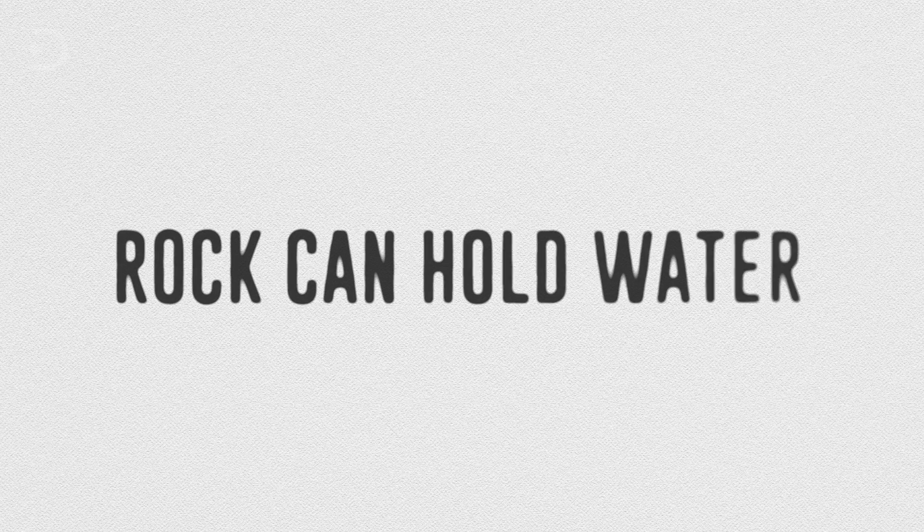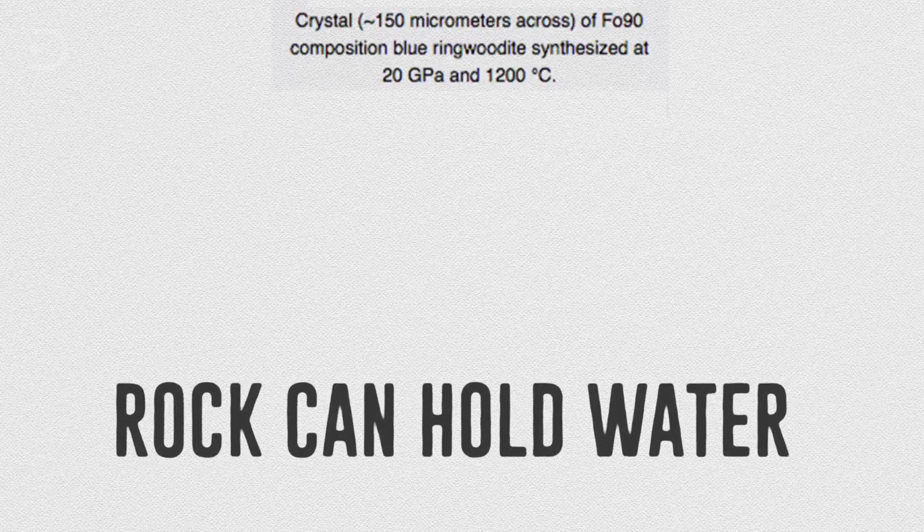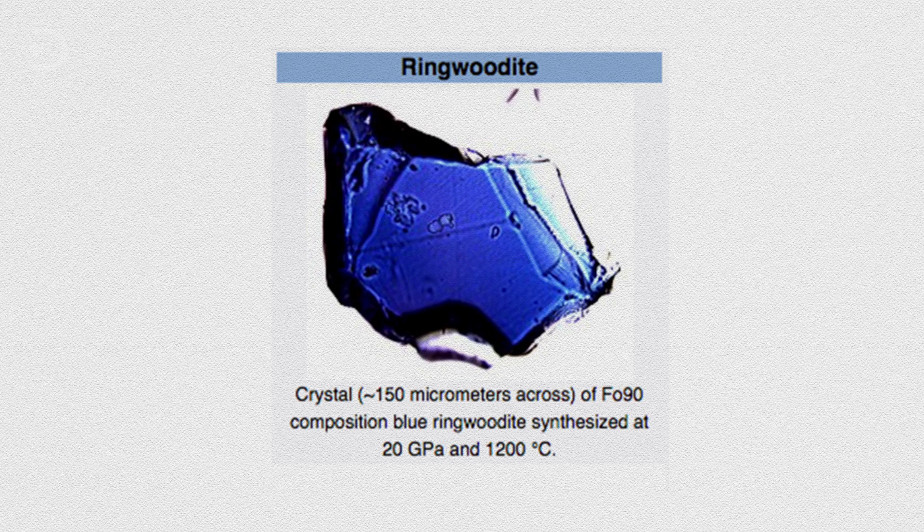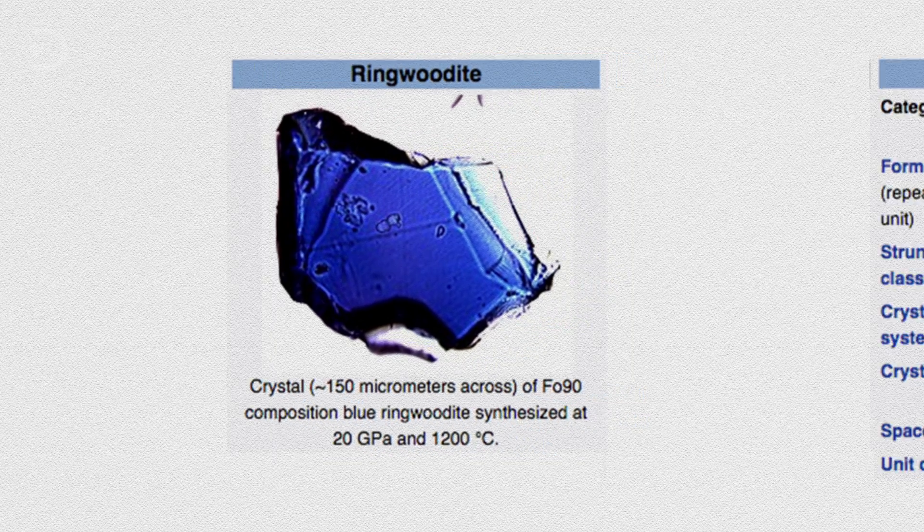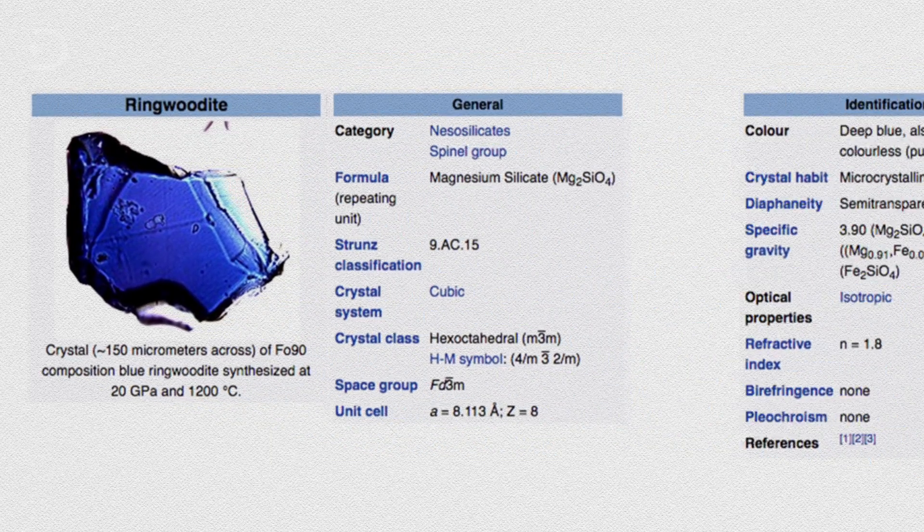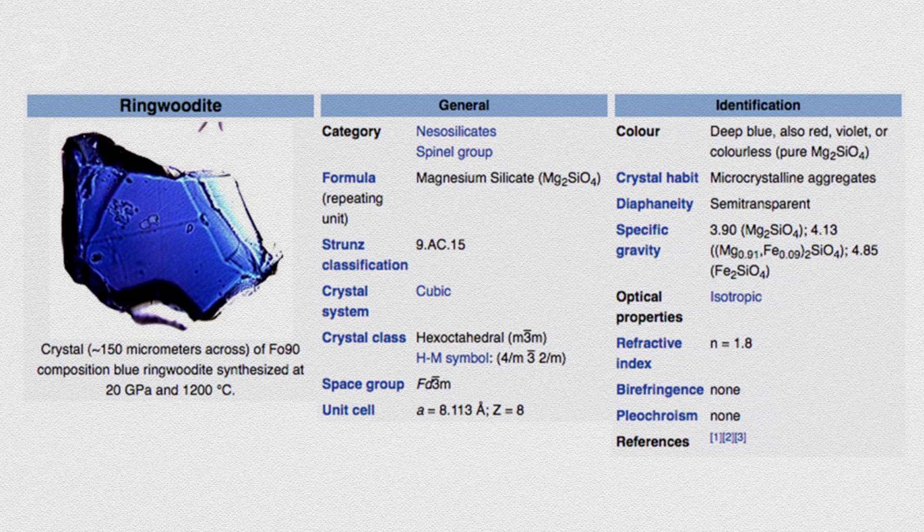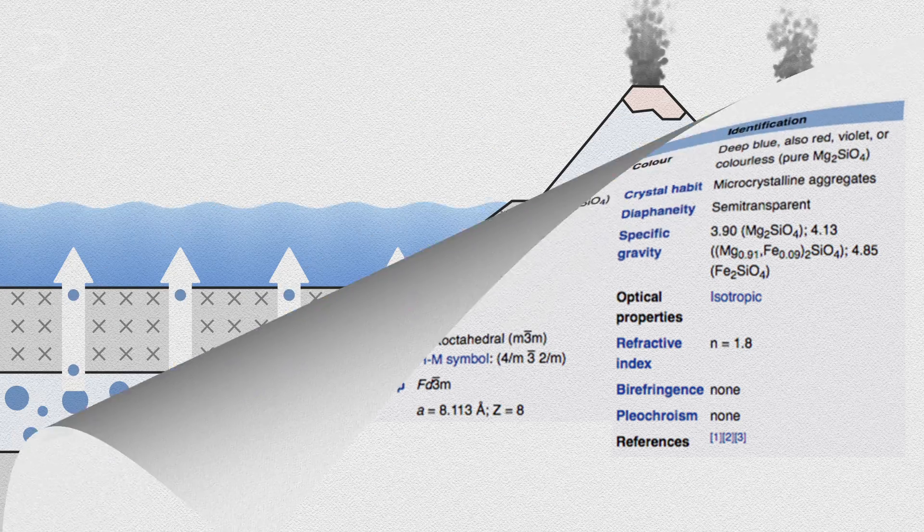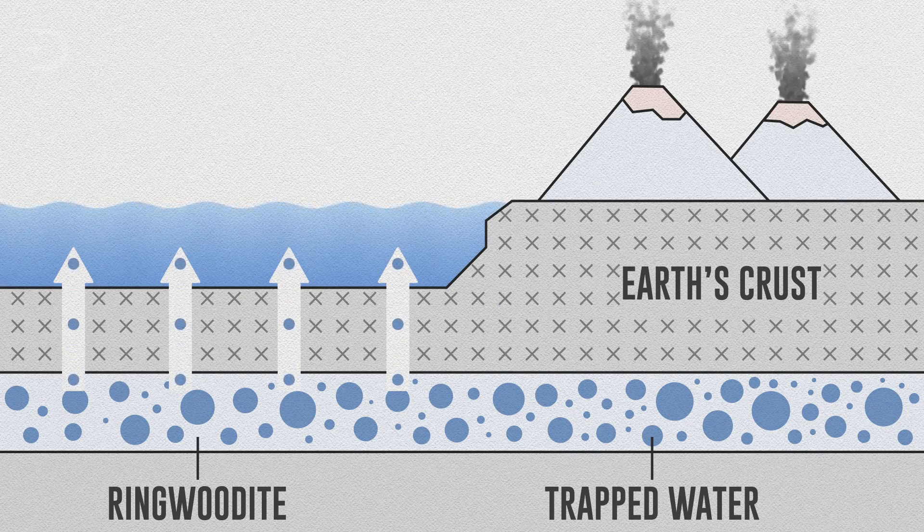And for those who are curious, yes, rock can hold water. The key to storing the water is a mineral called ringwoodite, which is a form of olivine that exists under high pressure and temperature, and acts like a sponge that attracts hydrogen and traps water. This mineral can contain a lot of water under conditions of the deep mantle.